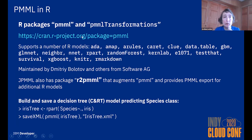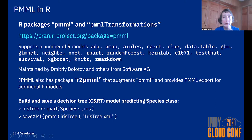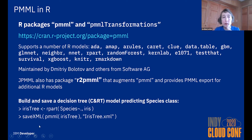Some data scientists prefer Python, some prefer R, and some use both. For R there is an open source package called PMML — now called PMML Transformations as it merged with a separate package — which supports a number of R models, particularly the most widely used ones. It's very easy to use: if your model is supported, you just give the pmml() command and it gets converted to PMML.